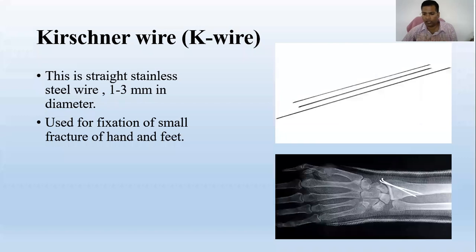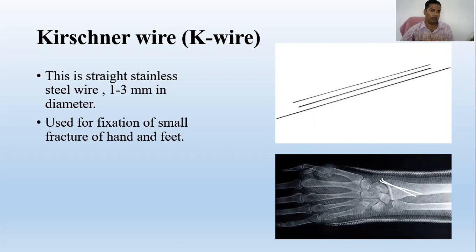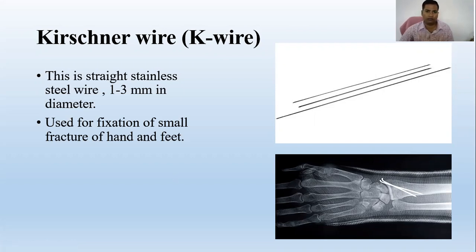This is the Kirschner wire, or K-wire. These are straight stainless steel wires, one to three millimeters in diameter, used for fixation of small fractures of the hand and feet — meaning fractures involving a small part of the bone, at the end of the bone, or small bones. The wire is passed through one segment to the other segment for immobilization. K-wires are especially important when articular surfaces are involved, in metatarsal fractures, or inter-metatarsal fractures. They are not used for long or large bones.